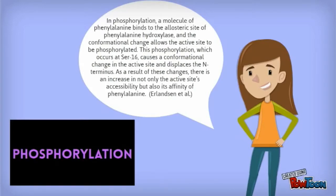In phosphorylation, a molecule of phenylalanine binds to the allosteric site of phenylalanine hydroxylase and the conformational change allows the active site to be phosphorylated. This phosphorylation, which occurs at serine 16, causes a conformational change in the active site and displaces the N-terminus. As a result of these changes, there is an increase in not only the active site's accessibility, but also its affinity to phenylalanine.